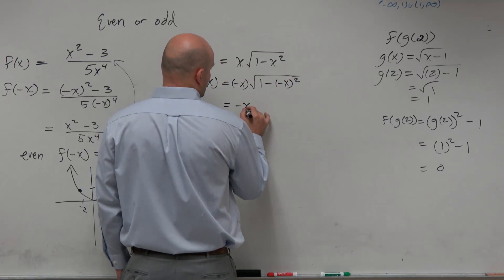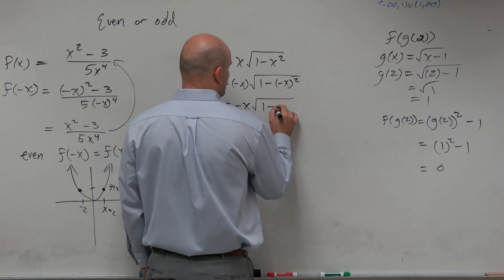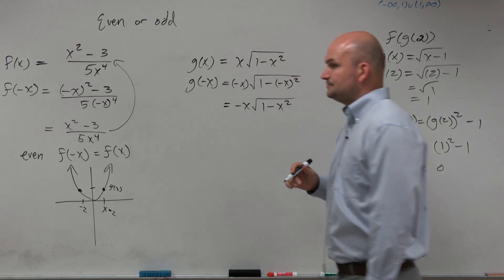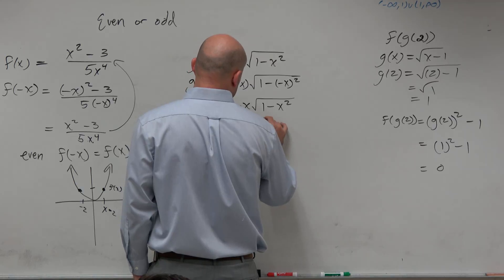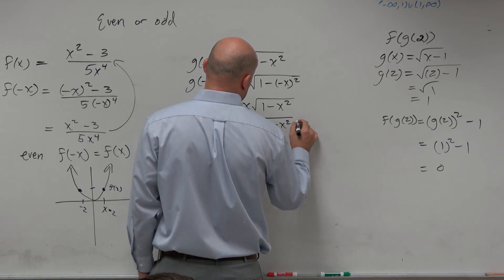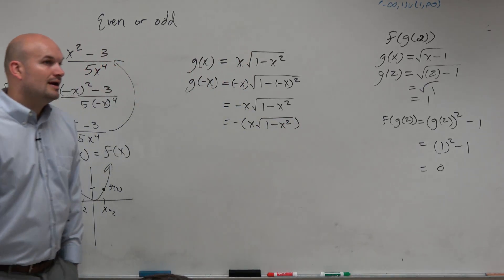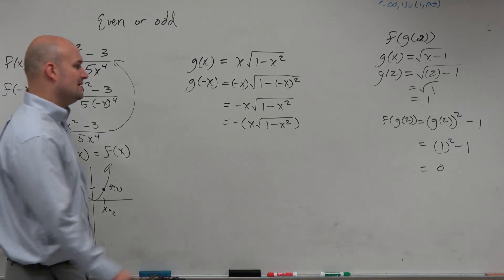And here we get negative x times the square root of 1 minus x squared. Now I'm going to factor out a negative just so you guys can see something. And this is an example of an odd function.